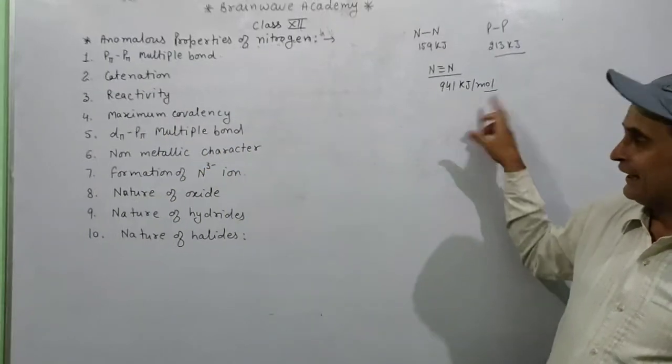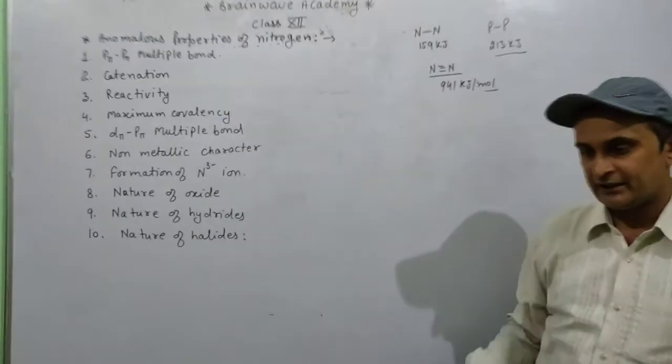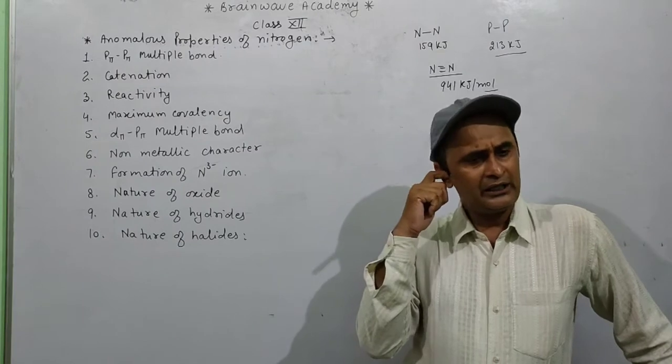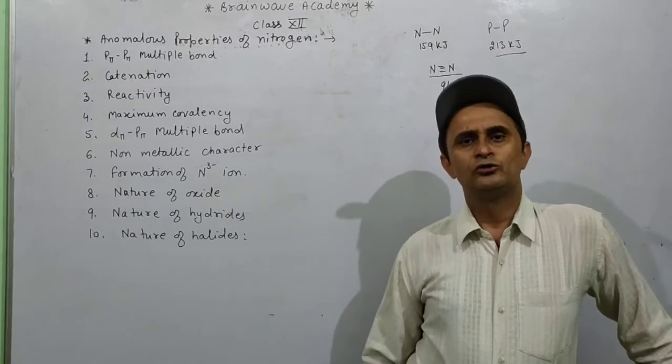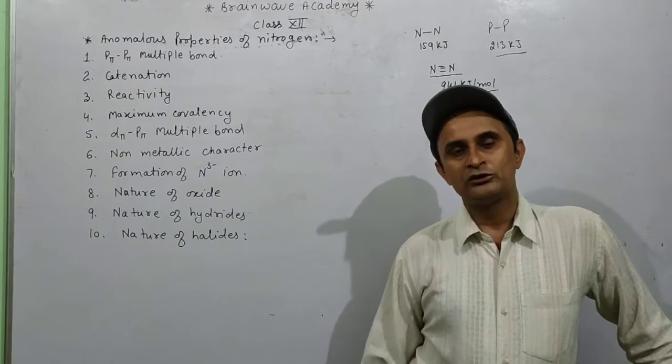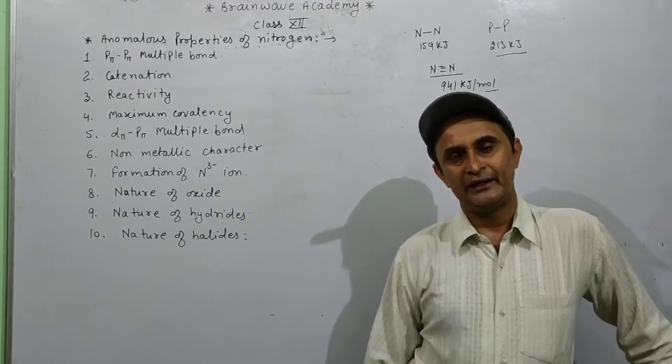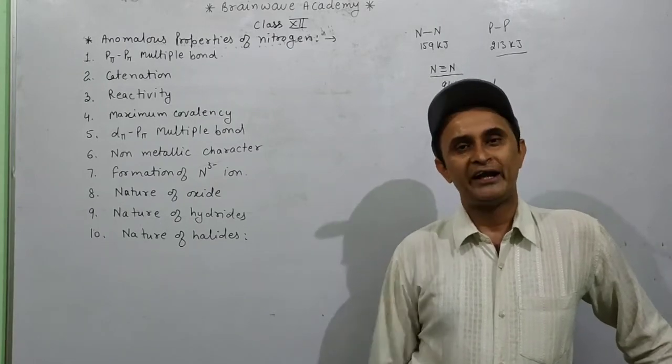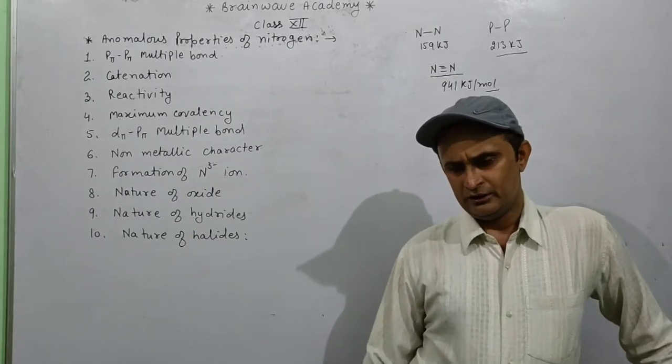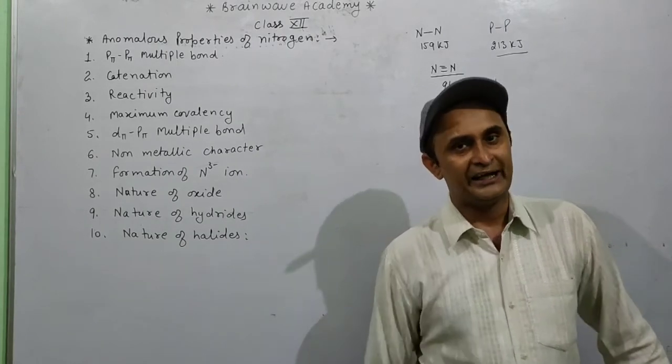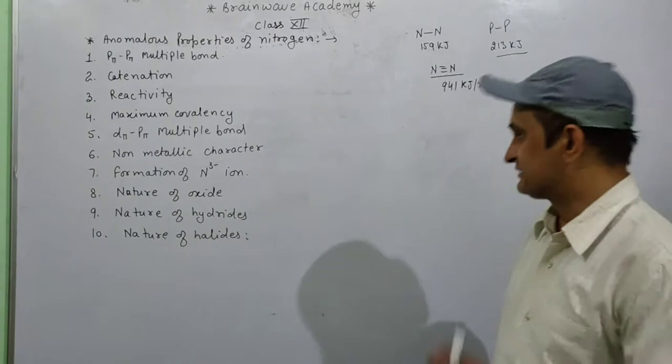Due to the high bond energy needed to break the triple bond, this high amount of energy cannot be given in a chemical reaction, so nitrogen becomes very less reactive. Apart from nitrogen, other group members are very reactive in nature. Even phosphorus can ignite in air.